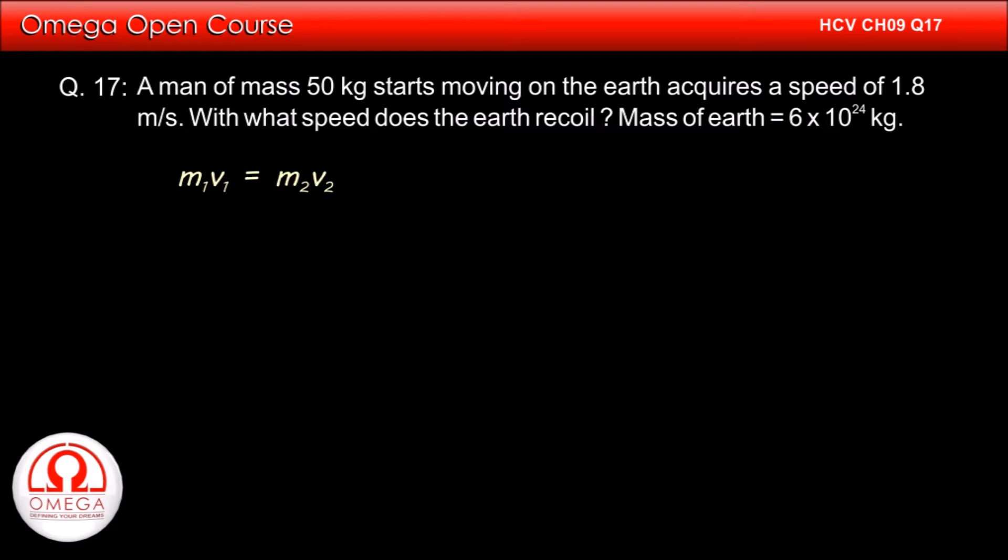If the mass of the man be denoted by m1, mass of the earth by m2, velocity of man by v1 and velocity gained by the earth by v2, then m1 v1 must be equal to m2 v2.